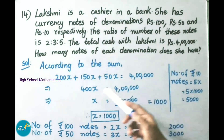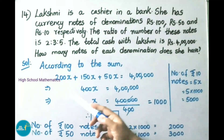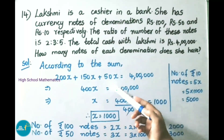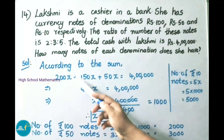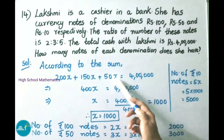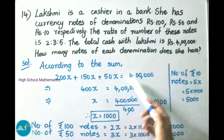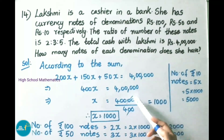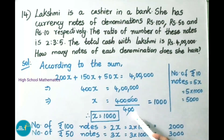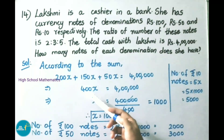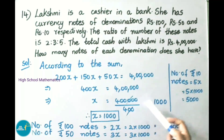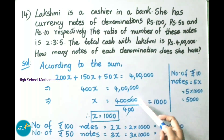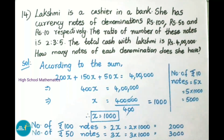According to the sum, 200x plus 150x plus 50x equals 4 lakhs. Adding all these values, we get 400x equals 4 lakhs. x equals 4 lakhs divided by 400. 400 times 1000 equals 4 lakhs. Therefore x value is 1000.